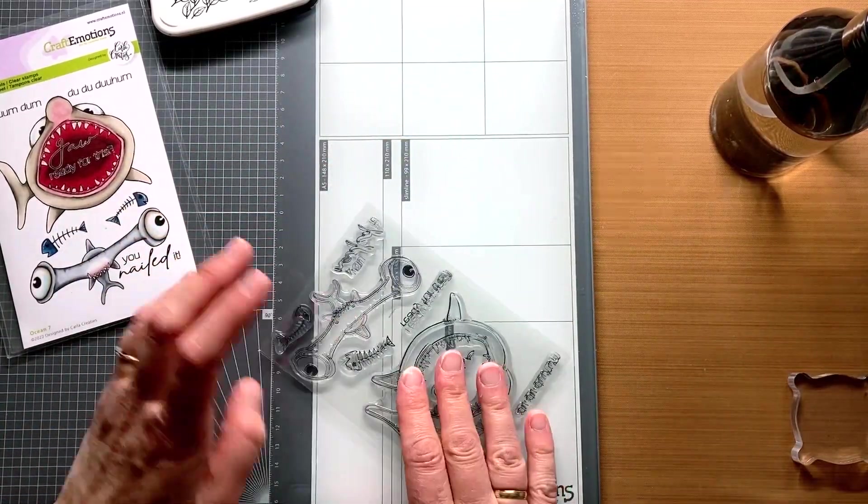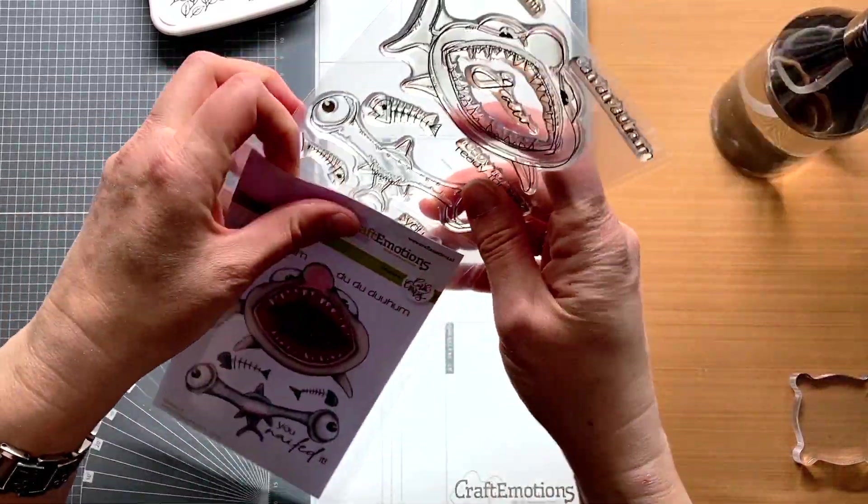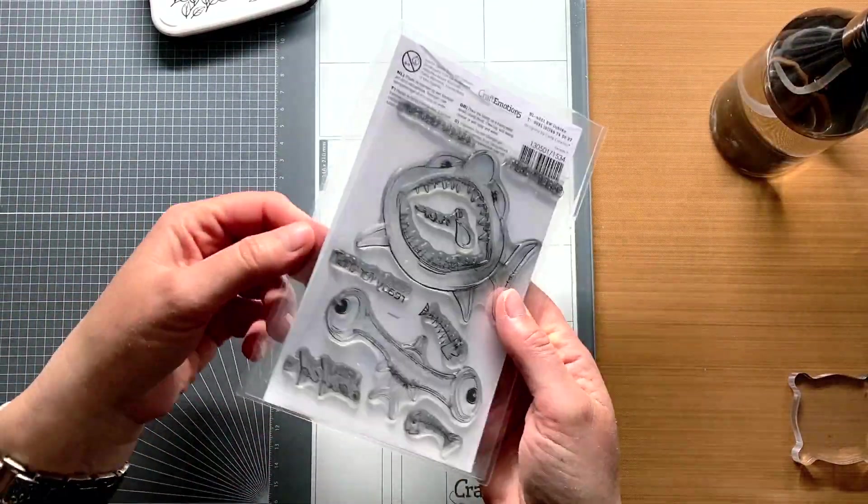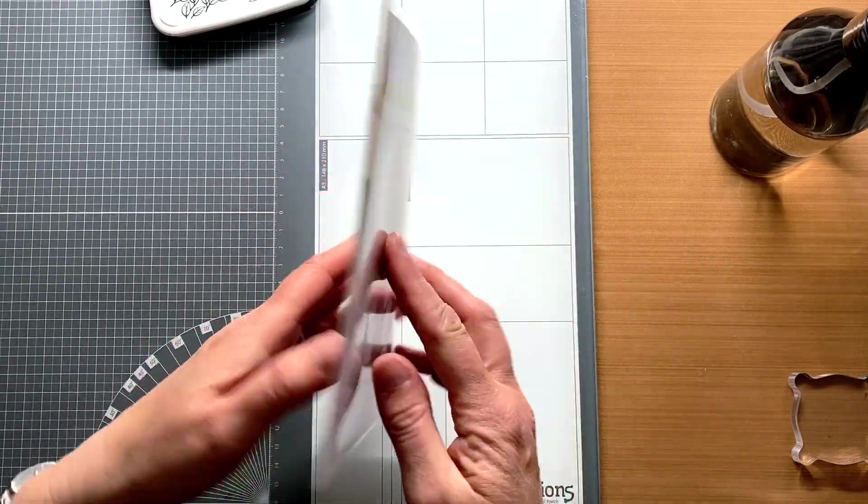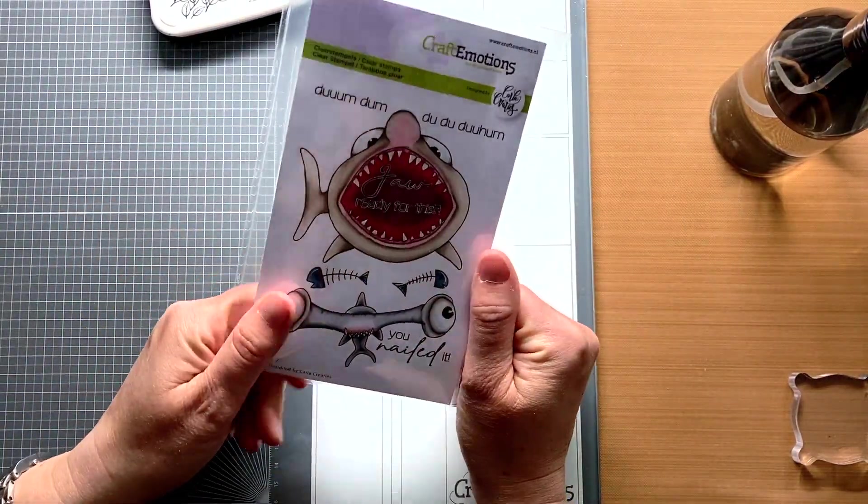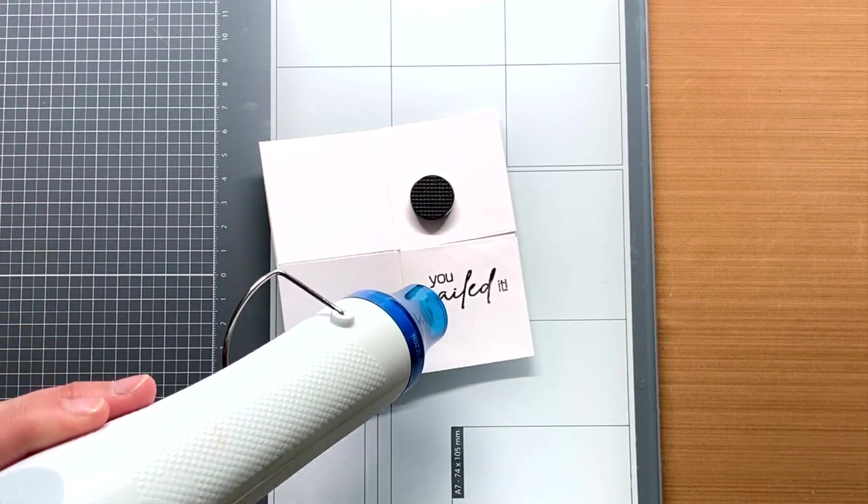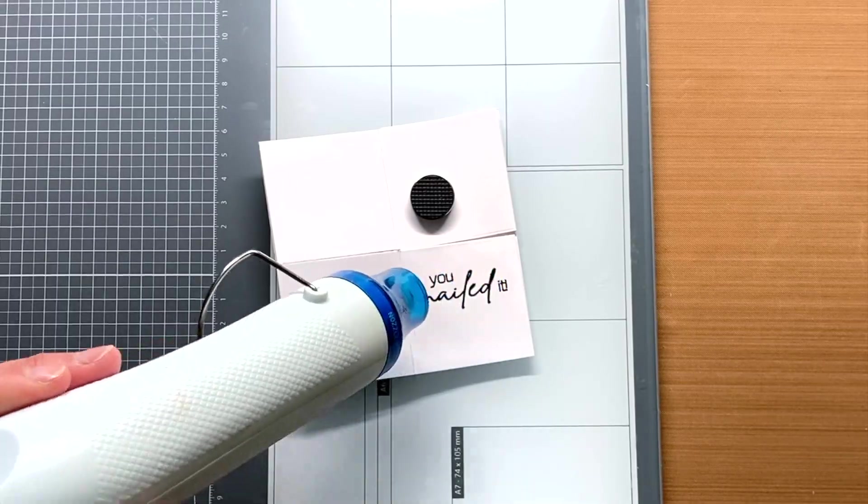I store my stamps in a self made laminated pocket. A link in the description box below and in the upper right of the screen to a video explaining how to make such a pocket yourself. I like to heat emboss. Then a stamped impression looks even more beautiful.